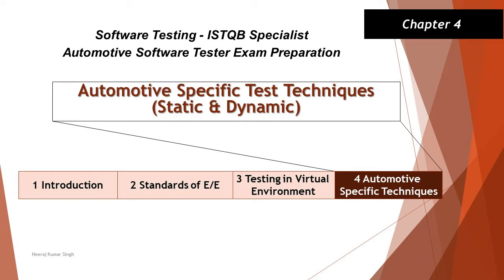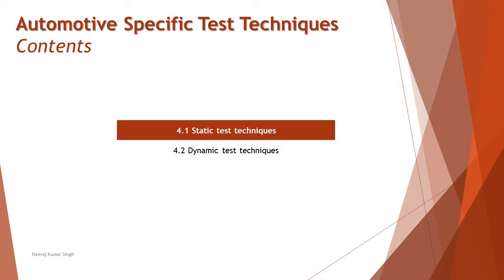We'll look at exactly what various ways we can conduct testing. Here we will be talking about how static and dynamic testing is conducted when it comes to automotive testing and automotive product testing. As part of this chapter, it is divided into two particular segments: number one, static test techniques, and number two, dynamic test techniques.